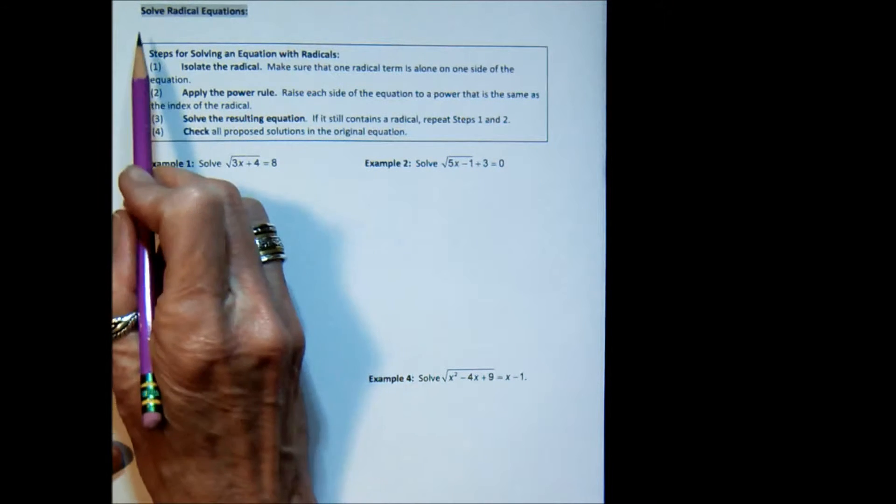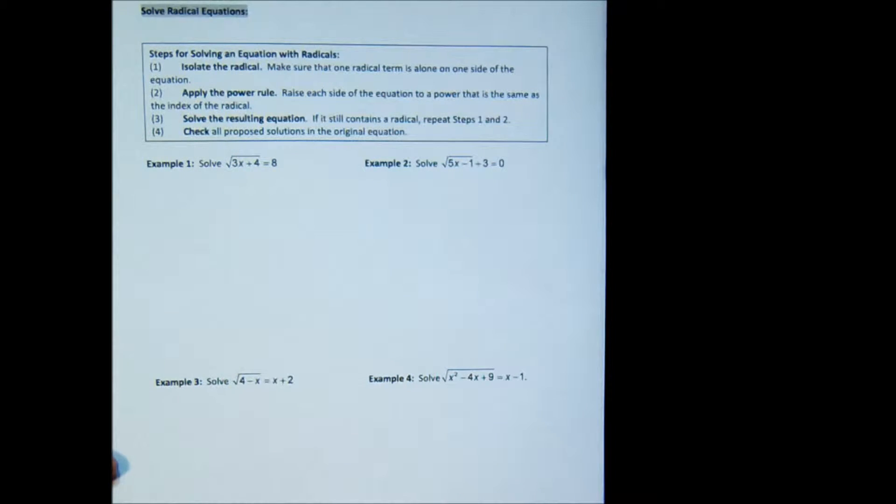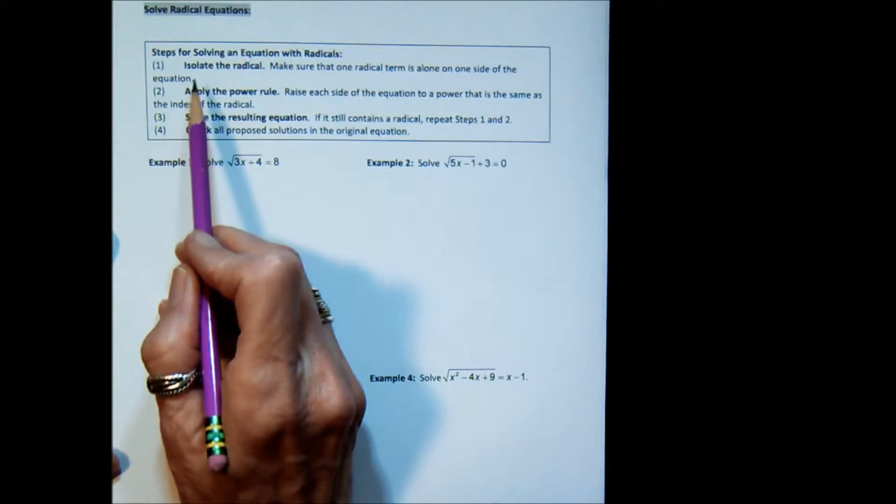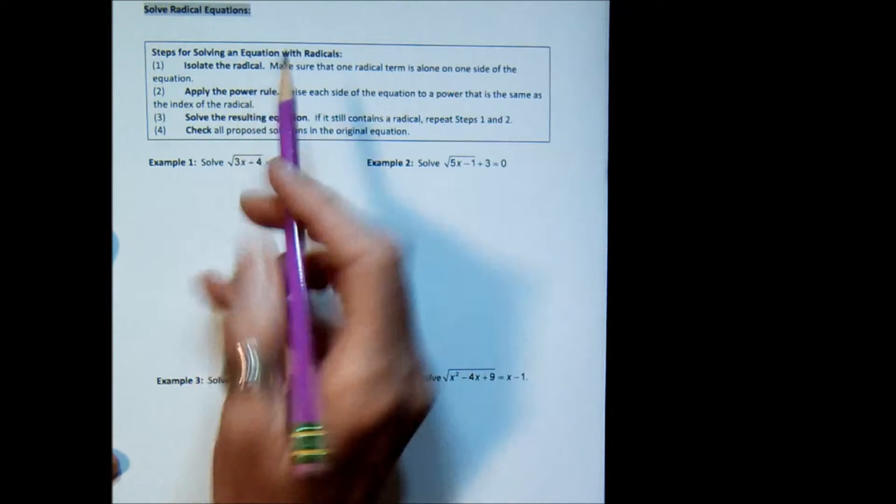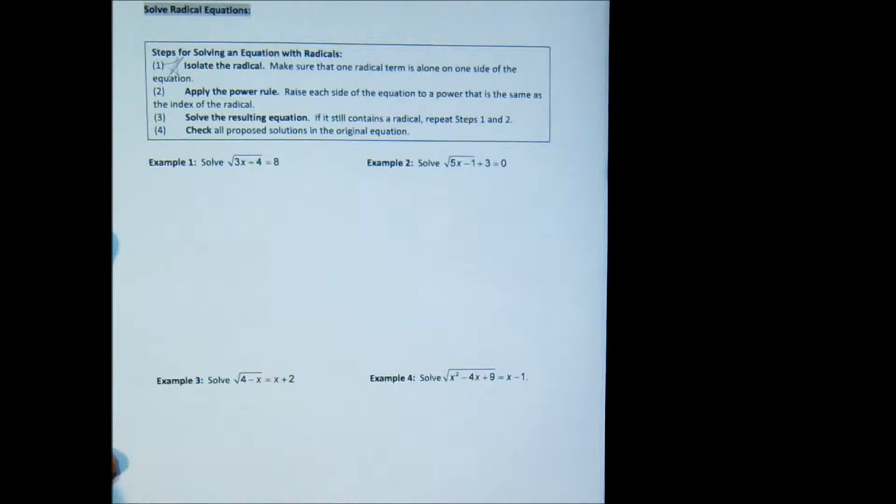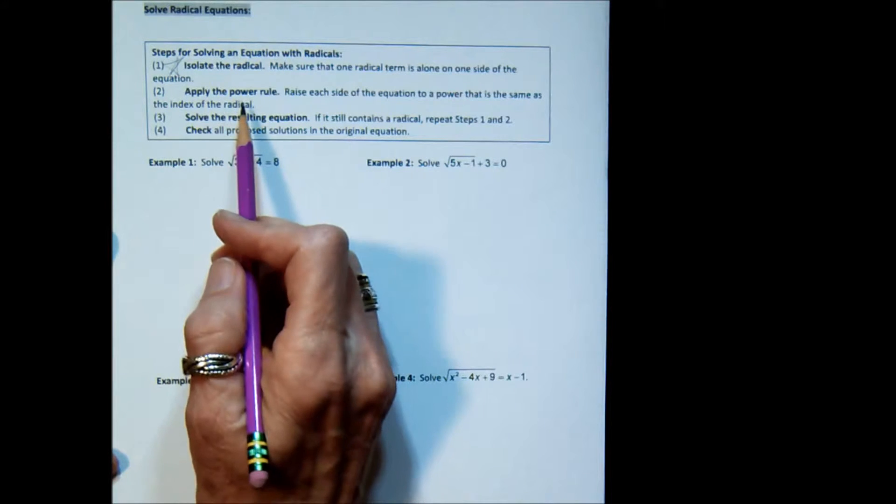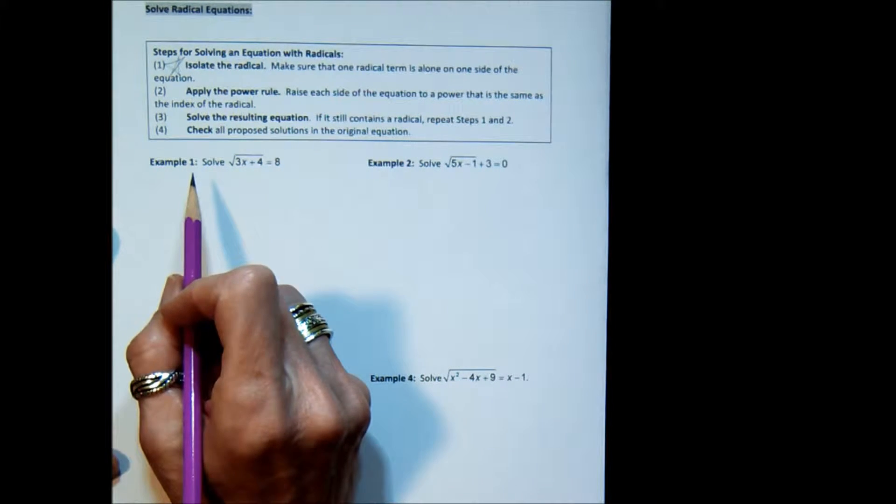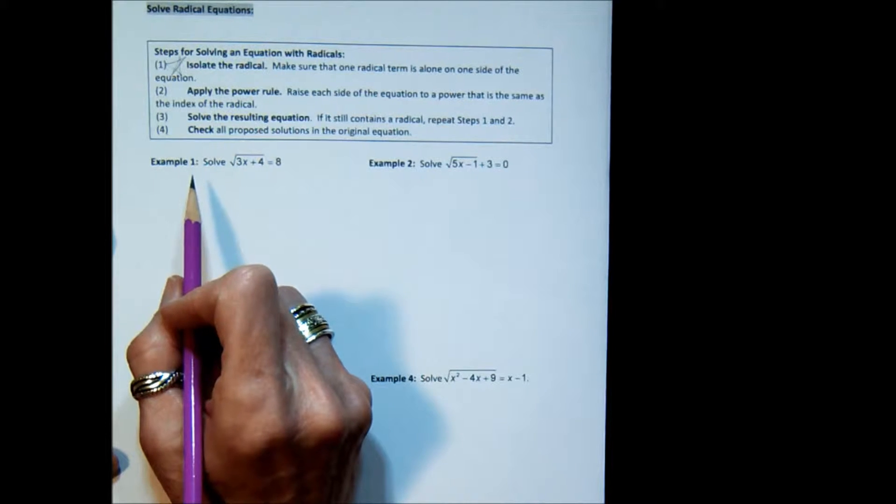This topic is on solving radical equations. Let's look at the steps for solving an equation that has radicals. First, isolate the radical. Very important step. Once you isolate the radical, you apply the power rule, which means if it's a square root, you square both sides. If it's a cube root, you cube both sides, etc.